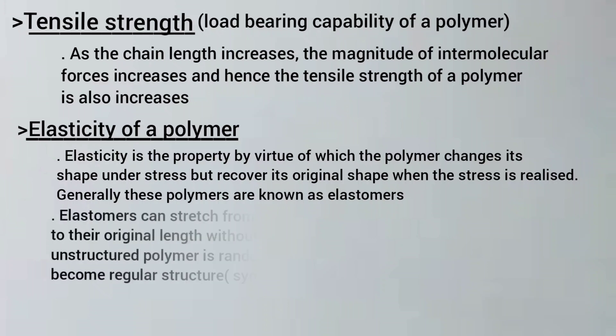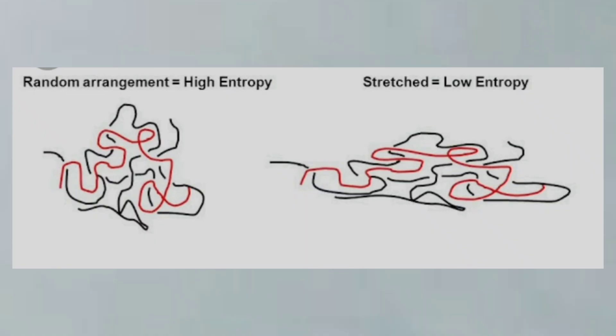Elastomers can stretch from 500 to 1000% elongation and return to their original length without any difficulty. This is because the unstretched polymer is randomly arranged — having high entropy — whereas when it is stretched, the stretched arrangement has a regular structure and low entropy.